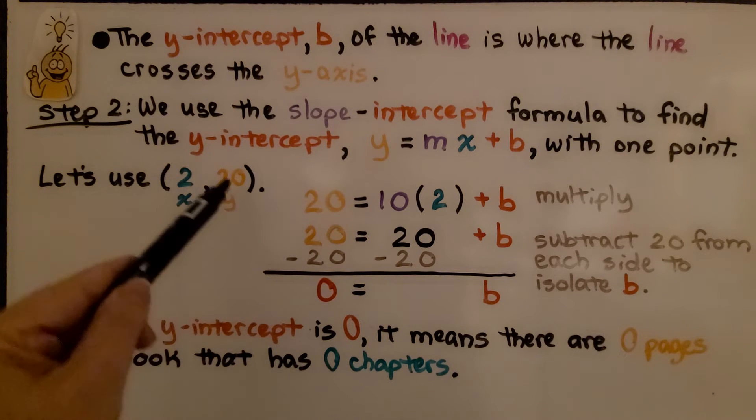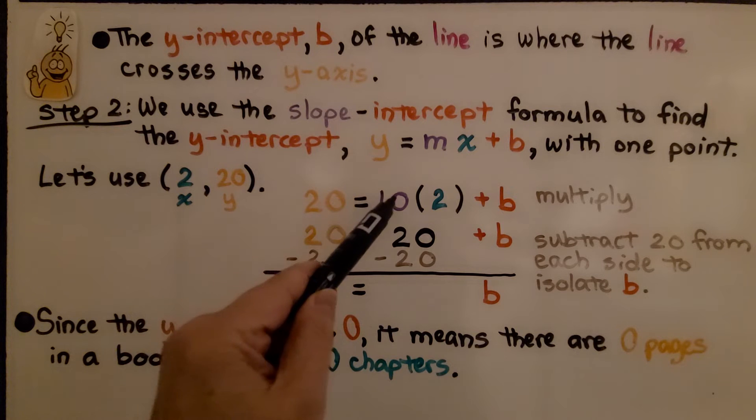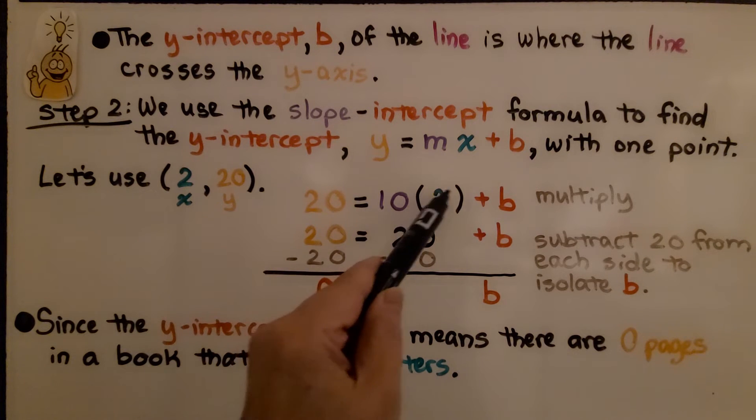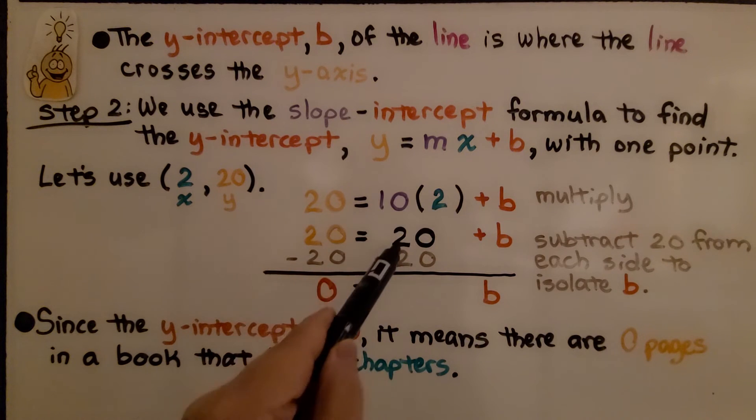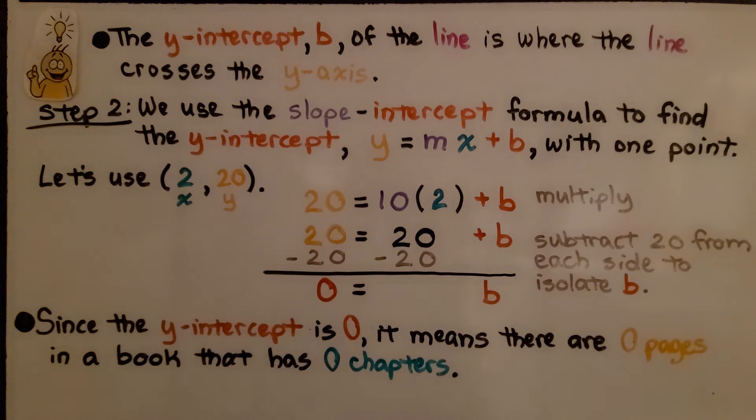We substitute in the values. We have y is 20, so we have 20 is equal to, we know our slope is 10, and our x value is 2, and it's plus the y-intercept b. We multiply this and get a 20. So we have 20 is equal to 20 plus b. We subtract the 20 from each side to isolate b, and we get 0 is equal to b. And since the y-intercept is 0, it means there are 0 pages in a book that has 0 chapters.